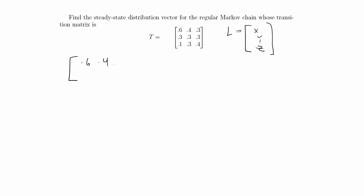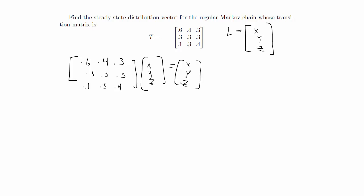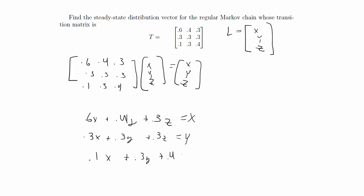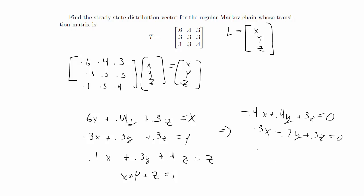So we have the 3 by 3 transition matrix [0.6, 0.4, 0.3; 0.3, 0.3, 0.3; 0.1, 0.3, 0.4] times [X, Y, Z] equals [X, Y, Z]. After multiplying and moving variables to the left side we get three equations: negative 0.4X plus 0.4Y plus 0.3Z equals 0; 0.3X minus 0.7Y plus 0.3Z equals 0; and 0.1X plus 0.3Y minus 0.6Z equals 0.